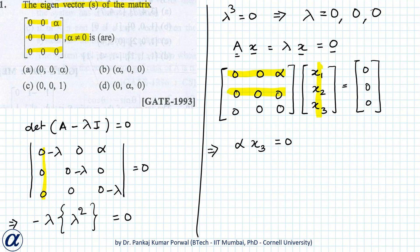We are given that alpha is not equal to zero, so this forces x₃ to equal zero. The system is satisfied when x₃ equals zero and x₁ and x₂ are any real values. Looking at answer choice A, x₃ is non-zero, so that cannot be our answer. In B, x₃ is zero and x₁ and x₂ can be any real values, so B is one of our eigenvectors.